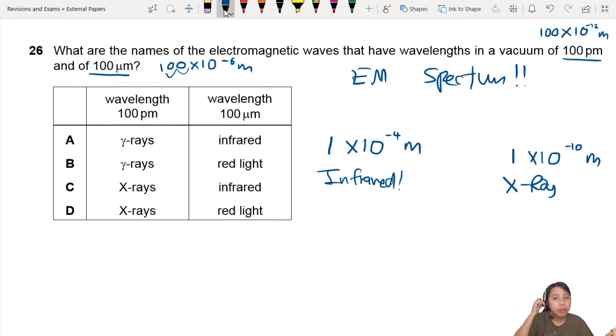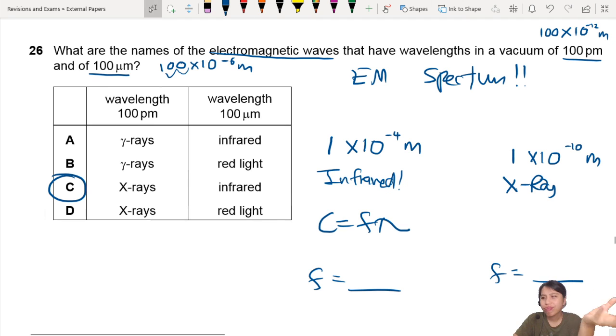If you want to convert this to frequency, maybe you memorize it in frequency. You can just do it with the formula v equals f lambda. But this is electromagnetic wave, so speed of light equals f lambda, and then you have a frequency. Anyway, so we have x-rays and infrared. That is our best choice here for this estimation question.